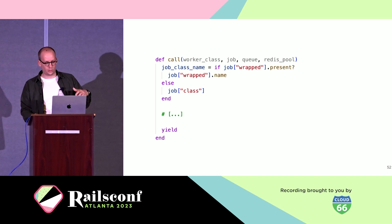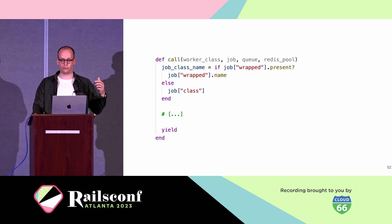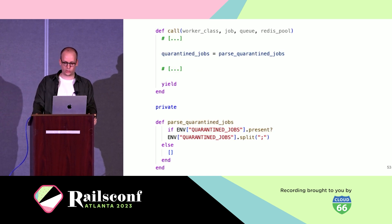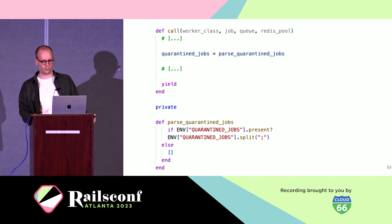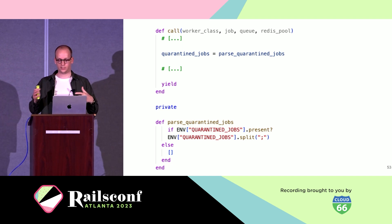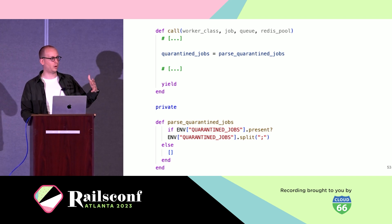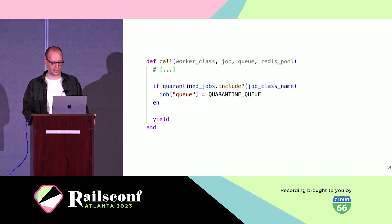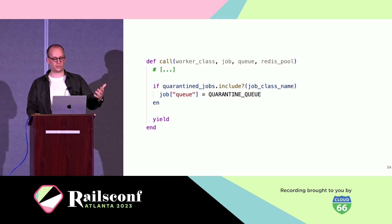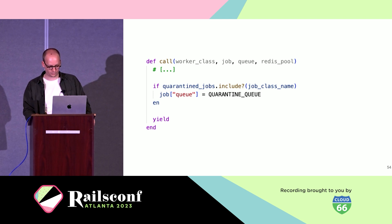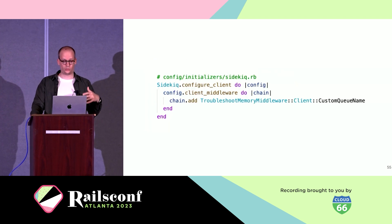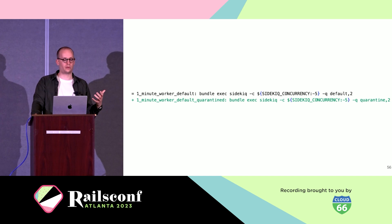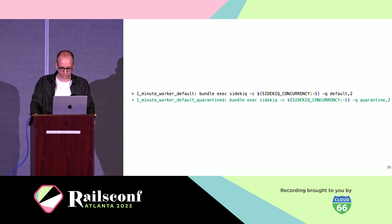So all we have to do is get the job that is enqueued, check if we need to put it into quarantine, and if so, update its queue. First, we get the job — Sidekiq will in some cases wrap the job, which is why we check for the wrapped key. Now that we have the job class name, we need to know if it should be quarantined. We set the jobs we want to quarantine as a semicolon-separated list in an environment variable — a quick and dirty approach that allowed us to test quickly. We then check if the job class is in the quarantine jobs list, and if so, assign it to the quarantine queue. What remains is to add the new middleware class to the middleware chain in the Sidekiq configuration file, and update our Procfile to start a new worker serving only the quarantine queue.